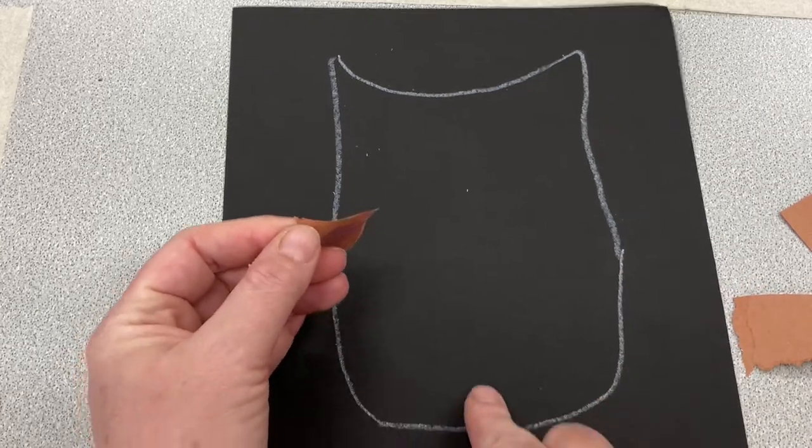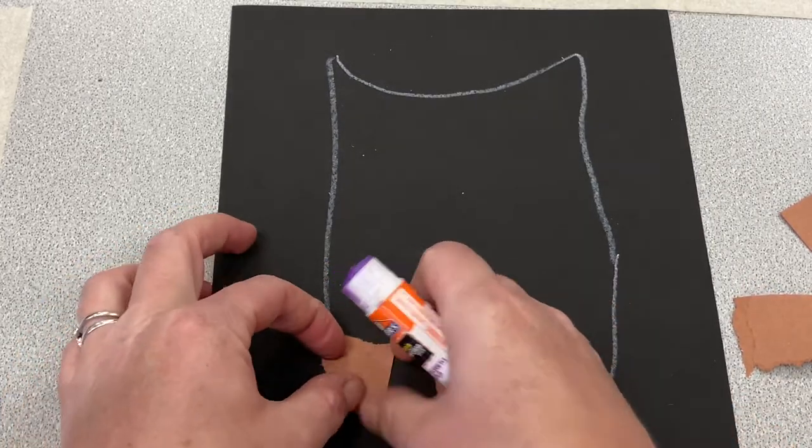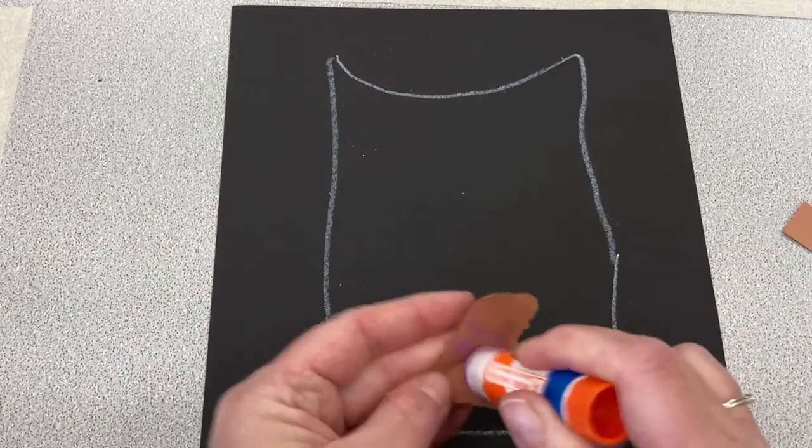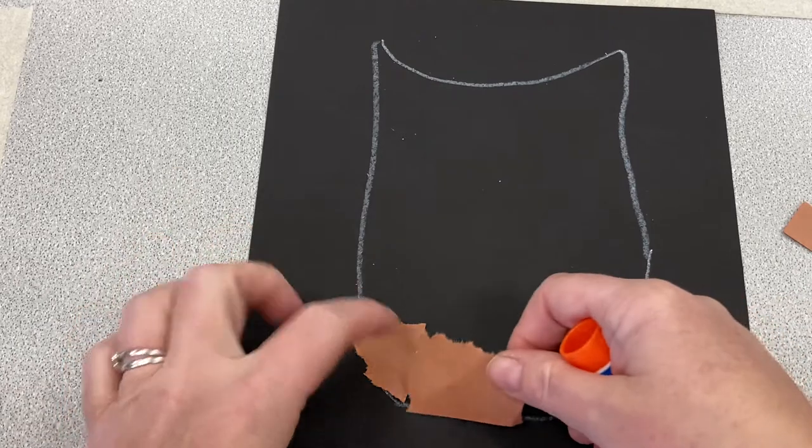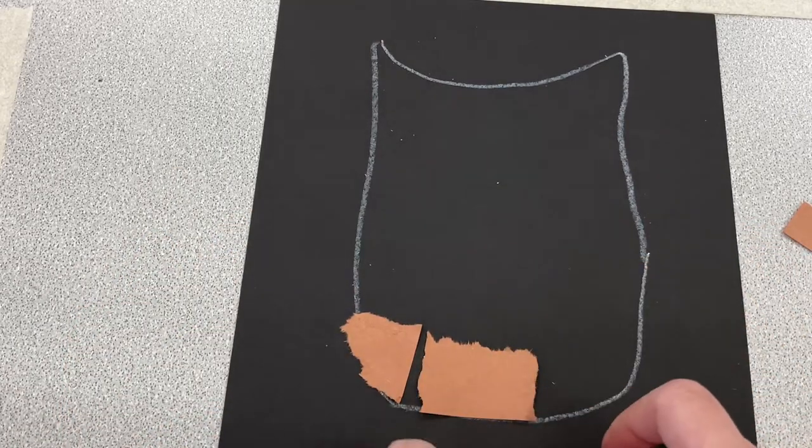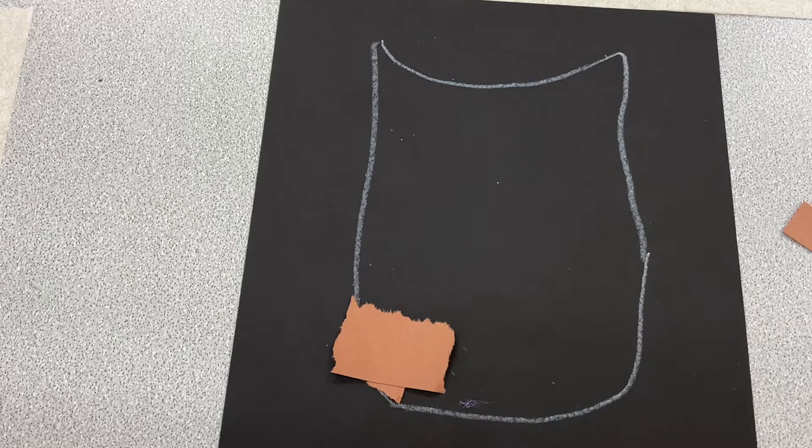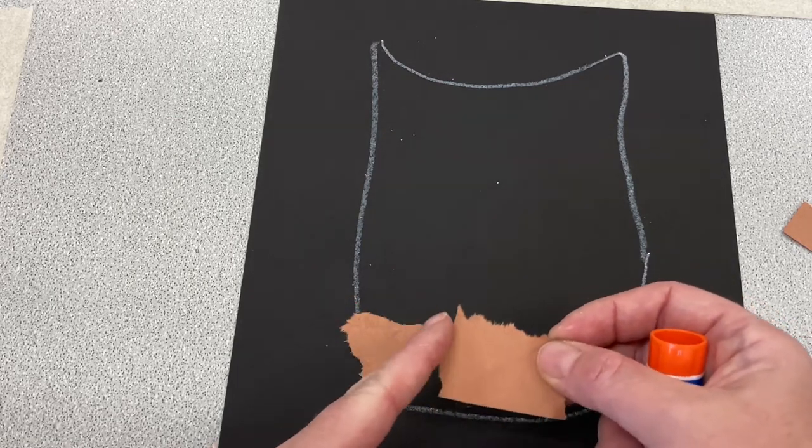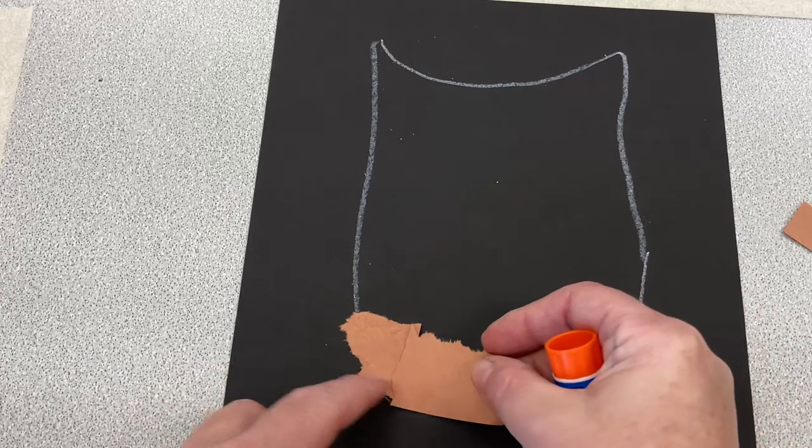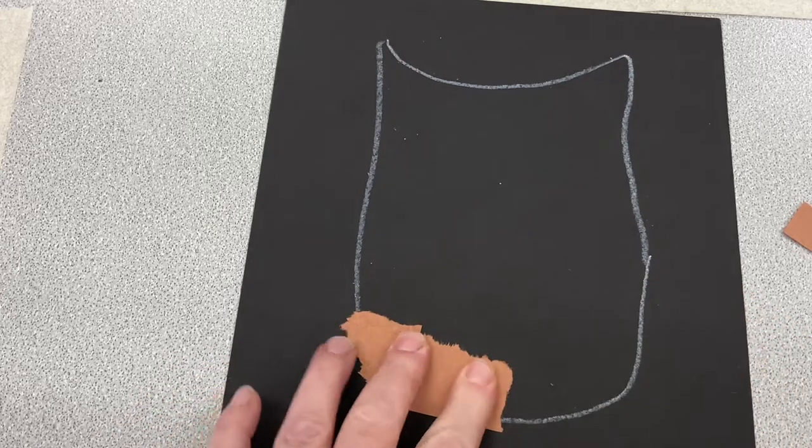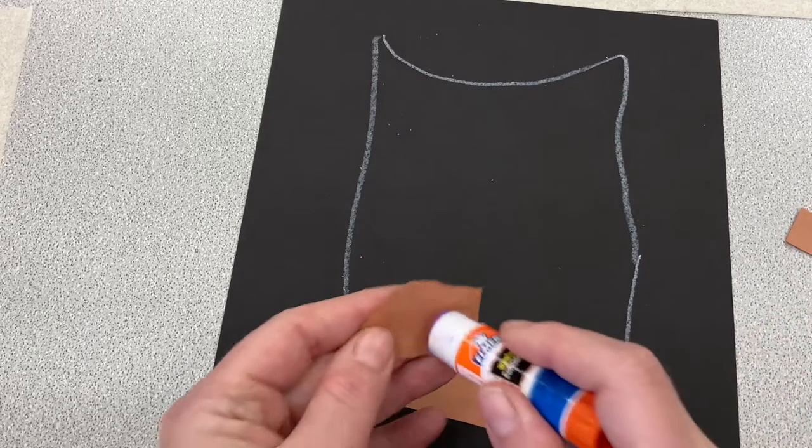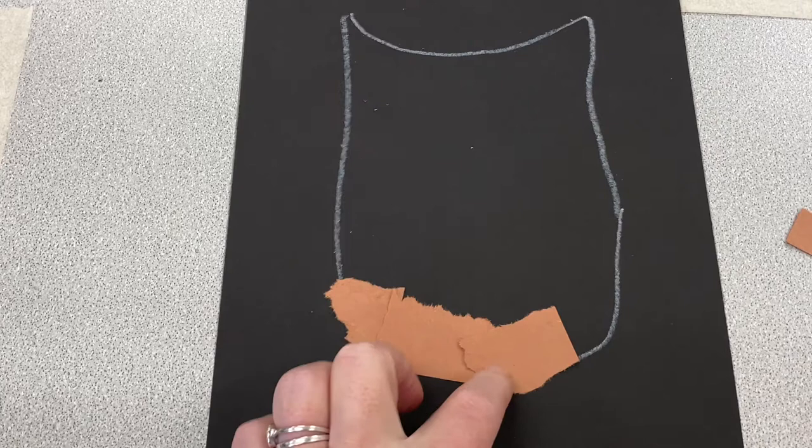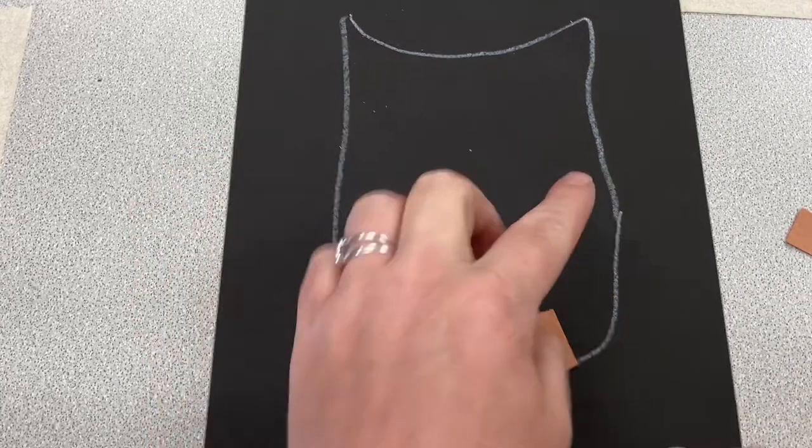I'm going to start here at the bottom of my owl and glue these little pieces in place. When I glue, I don't want to glue them next to each other, and I don't want to glue them on top of each other. I want to overlap the edges. Overlap means you take one piece and just put it over the other piece right next to it.